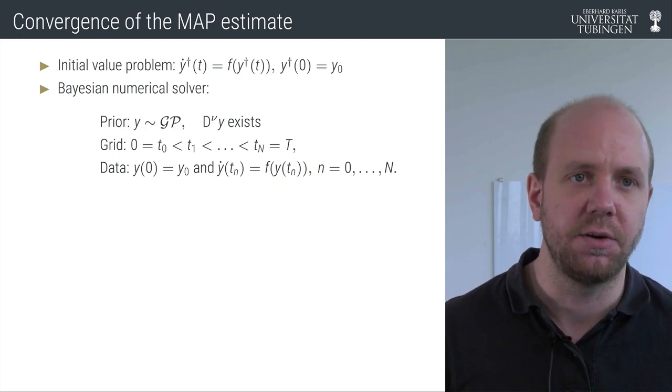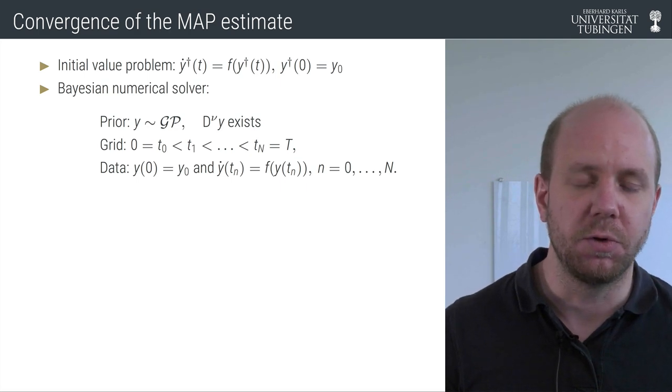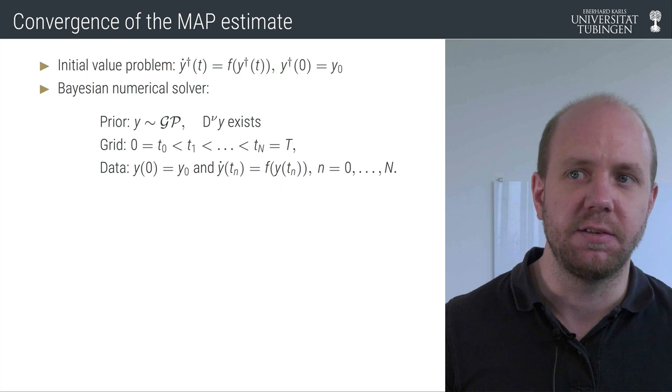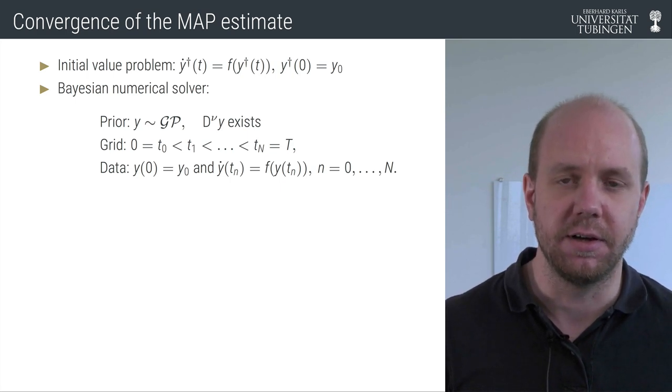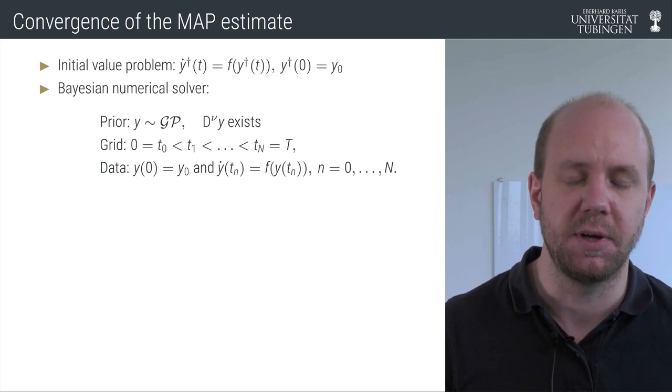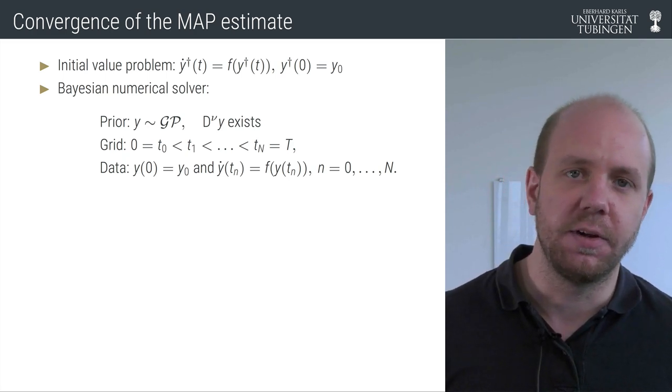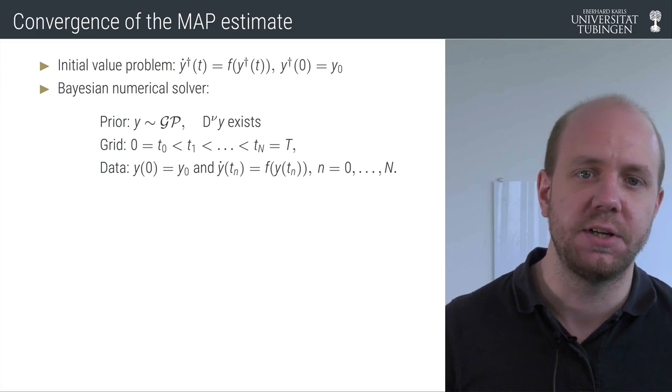The data is defined by specifying a grid on some interval zero to t on which we want to solve the ODE, and then we simply say that our GP interpolates the ODE relation on this particular grid. This defines a measure on interpolants of the ODE relation.